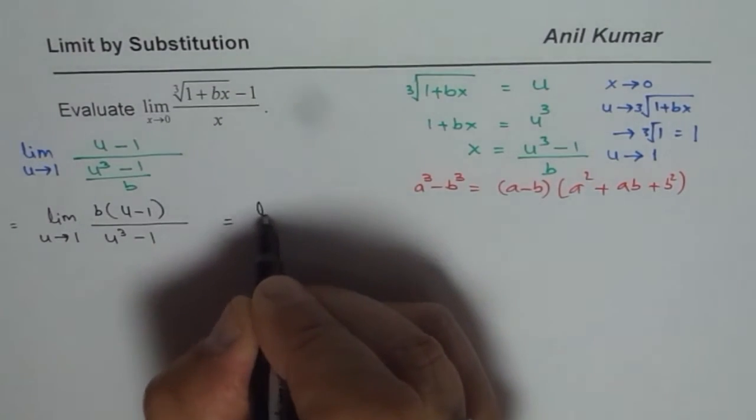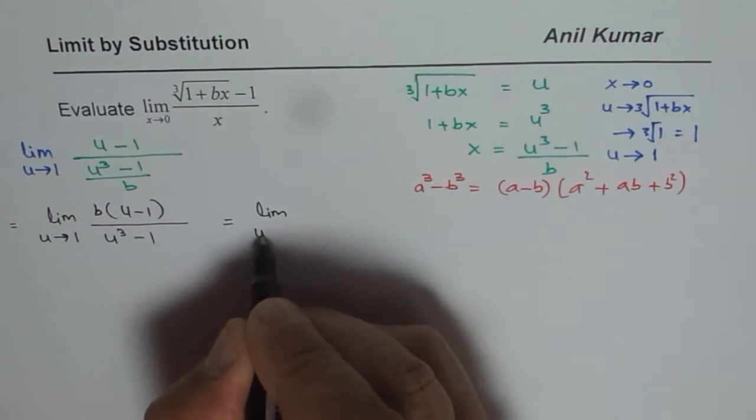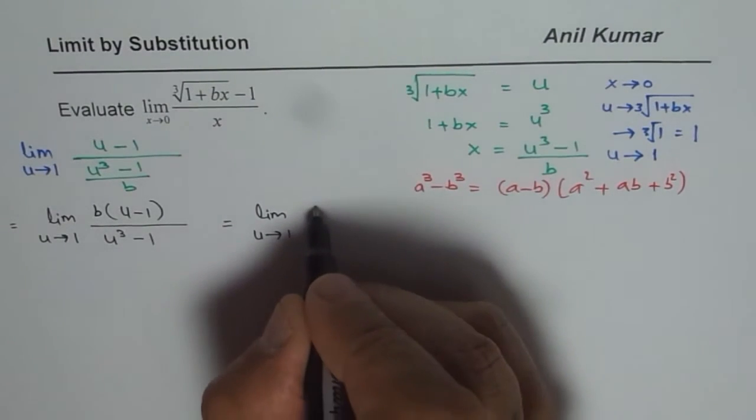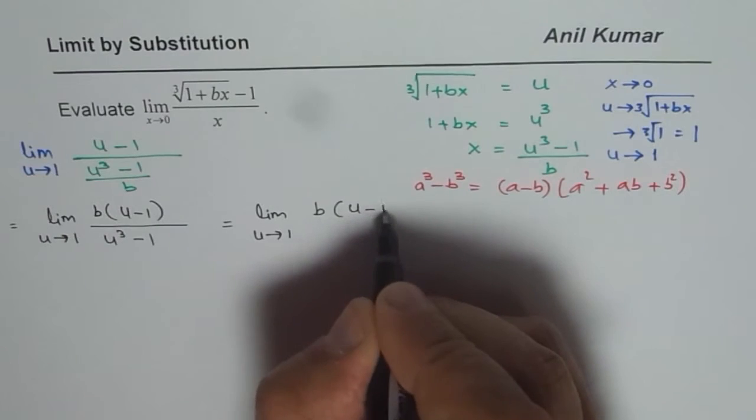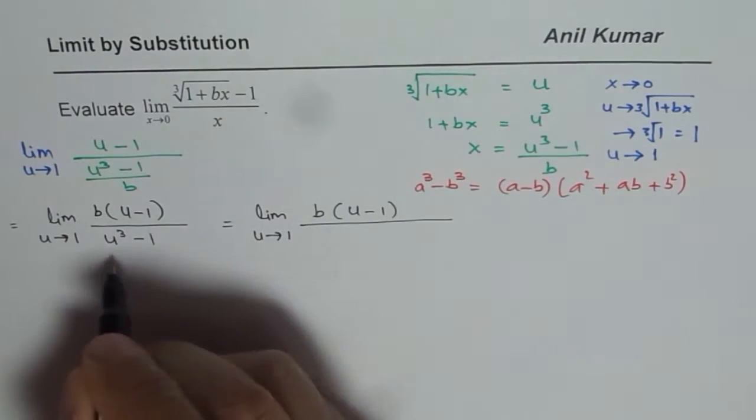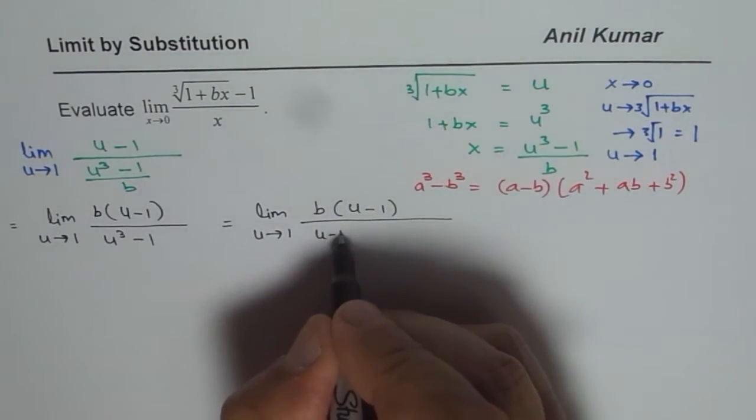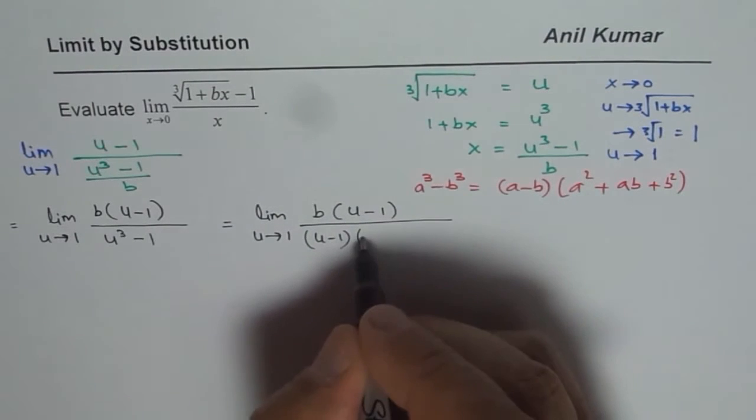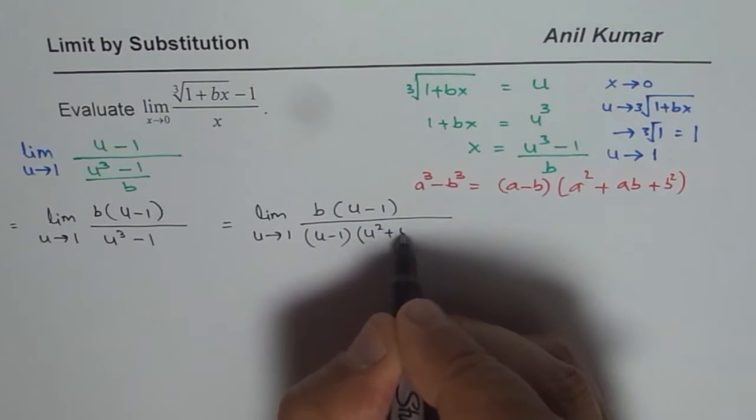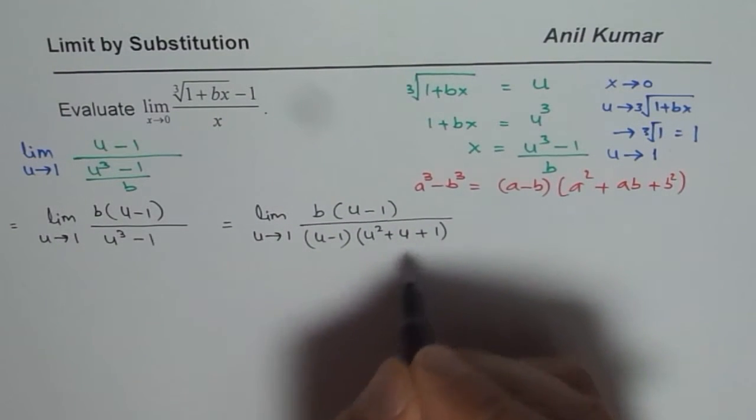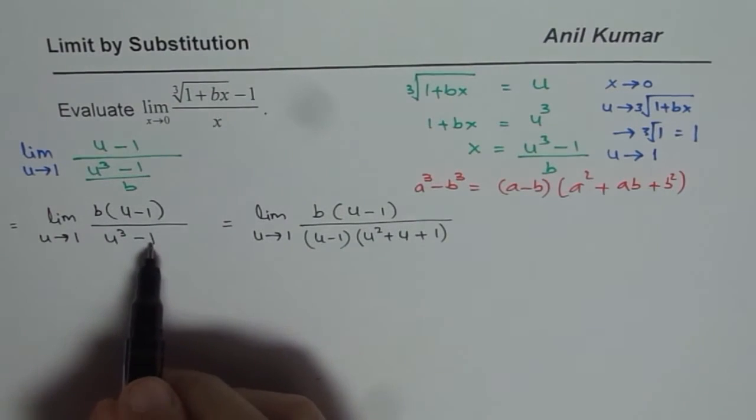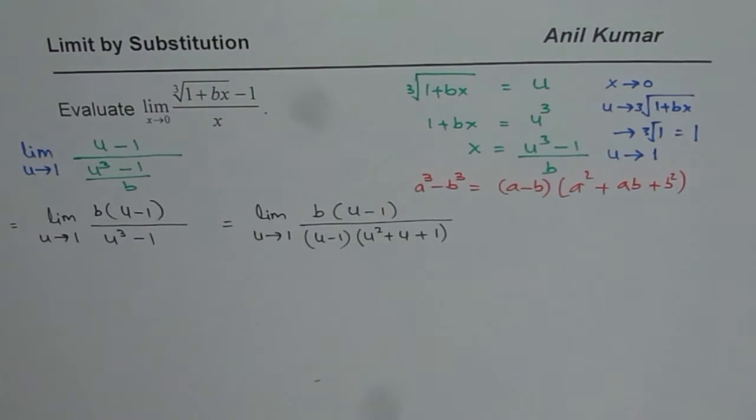So let me expand this. As we say limit u approaches 1, b times u minus 1, and the denominator for us will be u minus 1 times u squared plus u plus 1. Since b is 1 for us in this particular case.